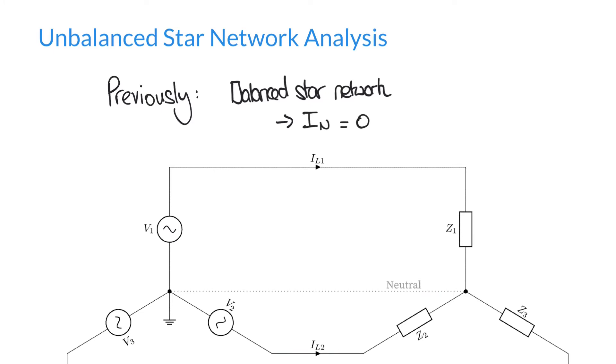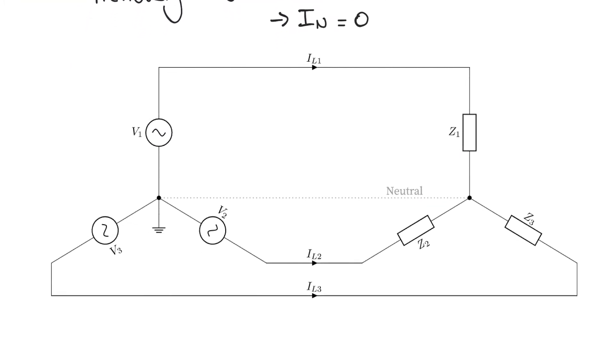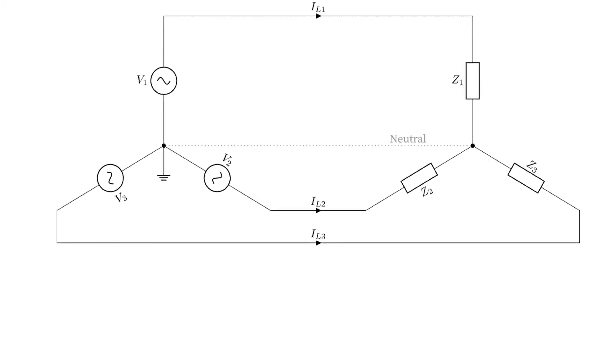So let's follow a similar method that we saw in our previous video. We'll take this instance of an unbalanced network but we'll assume that the supply voltage is still balanced, but the impedances are not balanced in this particular example.